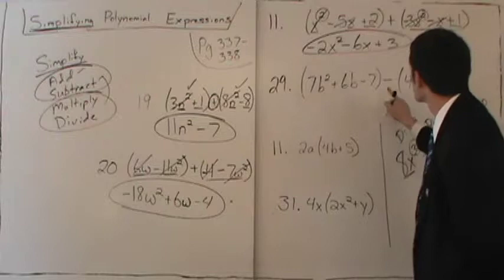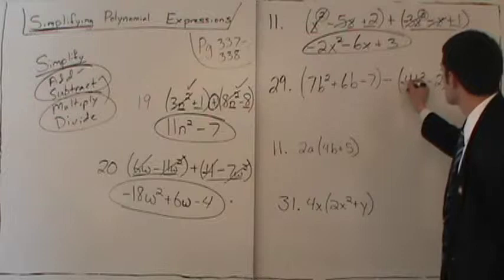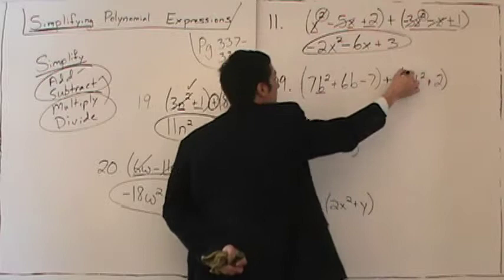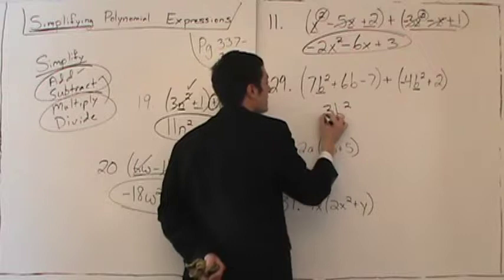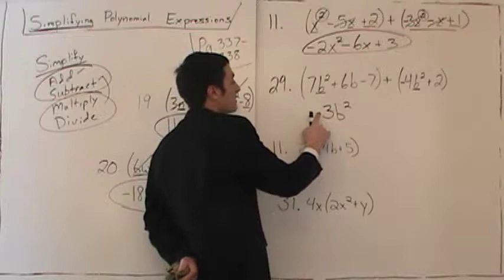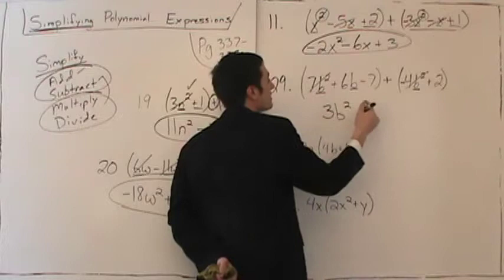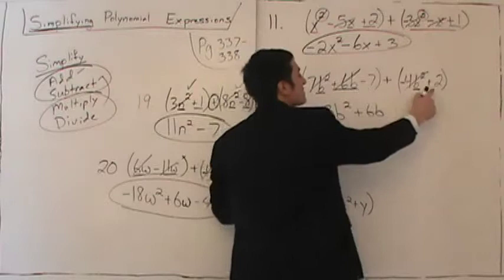We have subtraction again, so distribute the negative: make positive 4 negative and make negative 2 positive, then change to addition. Look for matching terms. B squared matches B squared: 7 plus negative 4 — signs are different, subtract — 7 minus 4 is 3, take the sign of the larger which is positive, giving 3B squared. The B term has nothing matching it, so bring down positive 6B. For the numbers: negative 7 and positive 2 — signs different, subtract — 7 minus 2 gives 5, sign of the larger is negative, so minus 5. Result: 3B squared plus 6B minus 5.